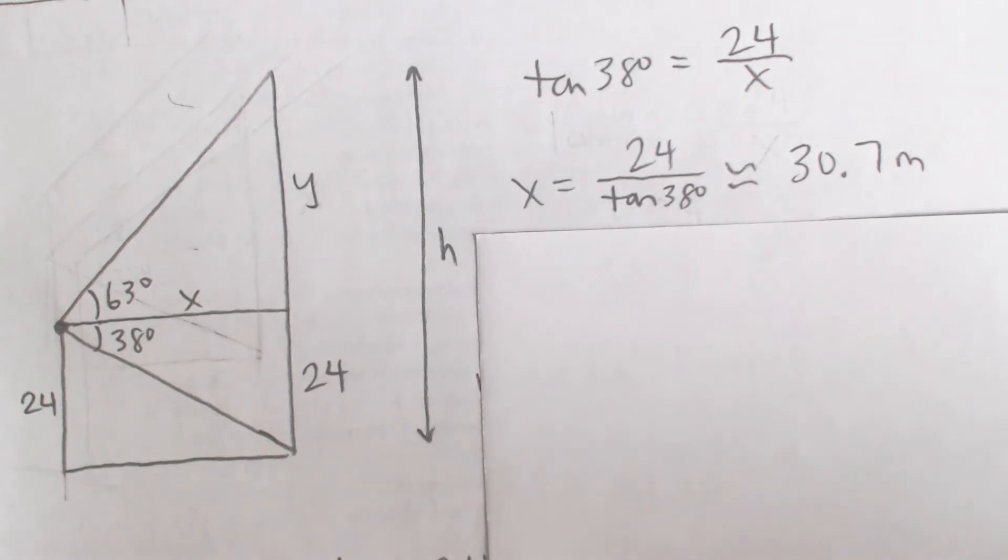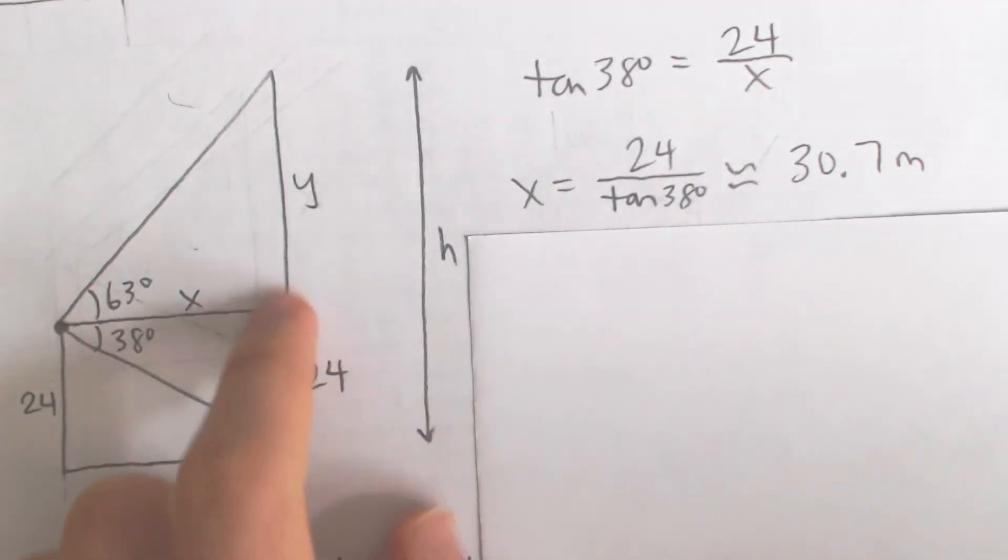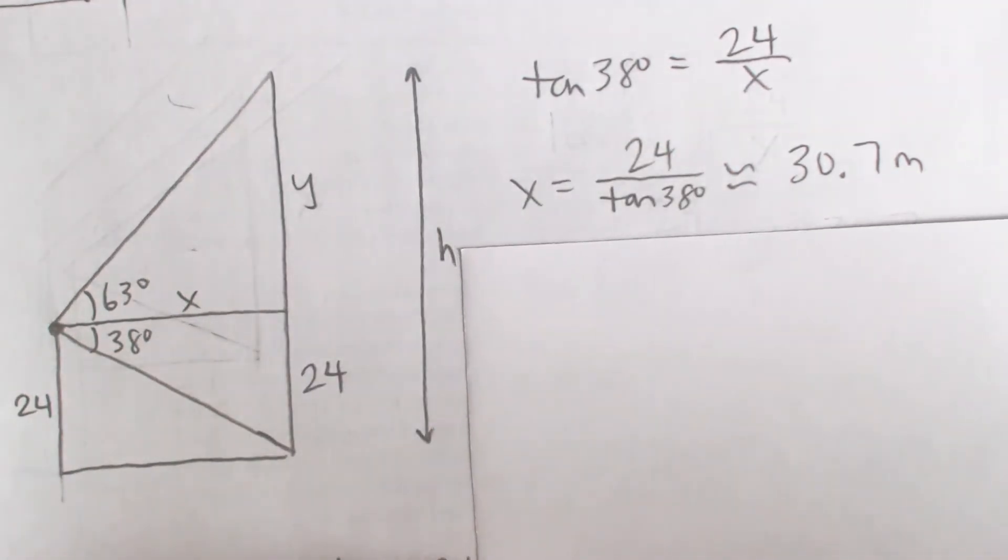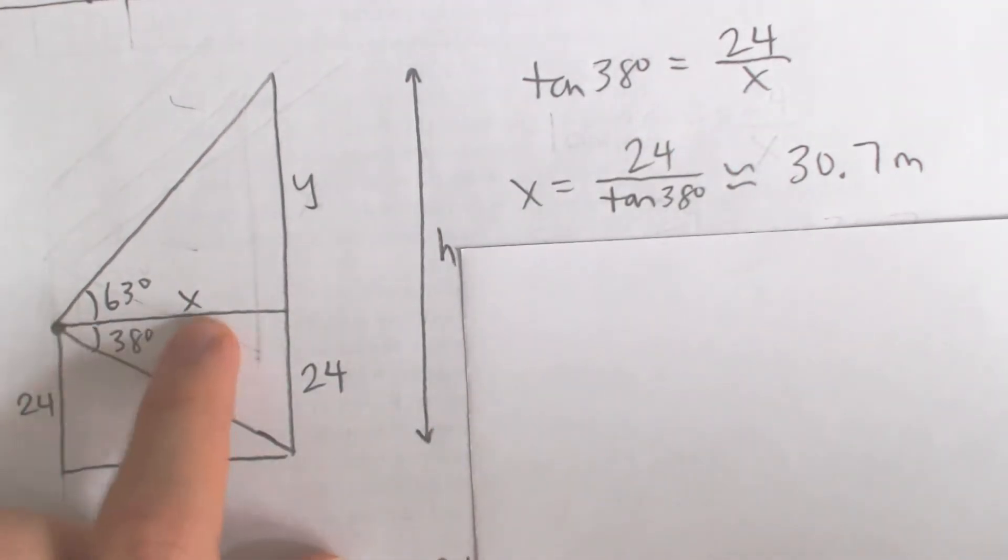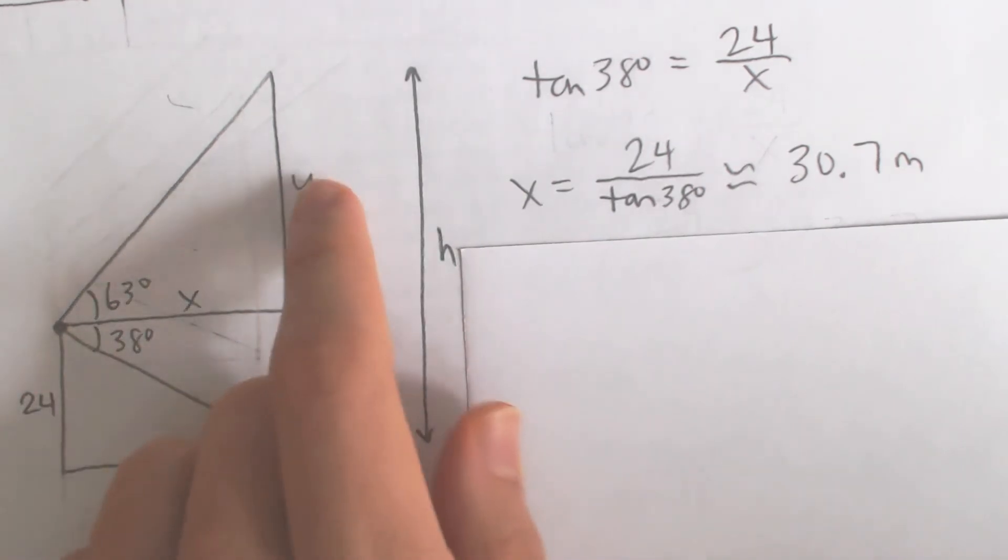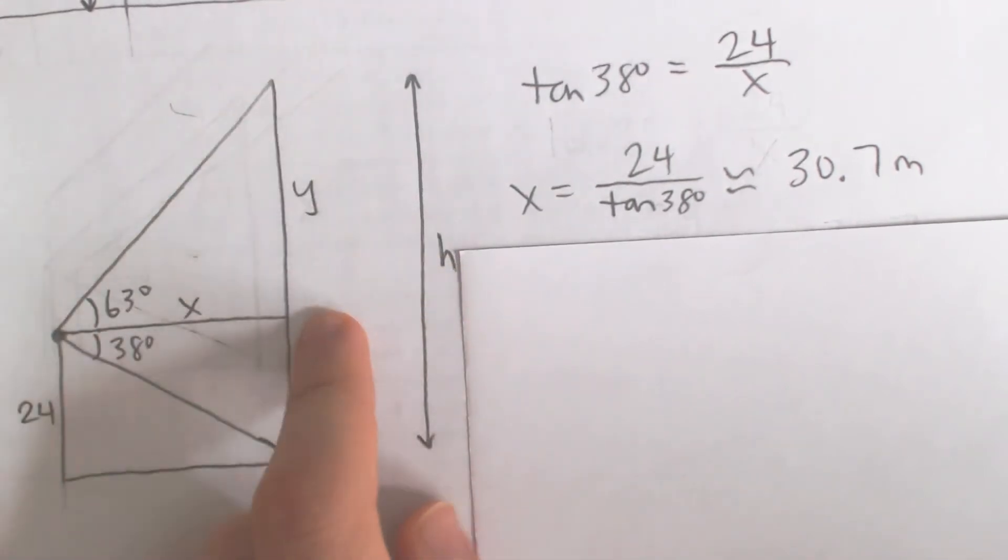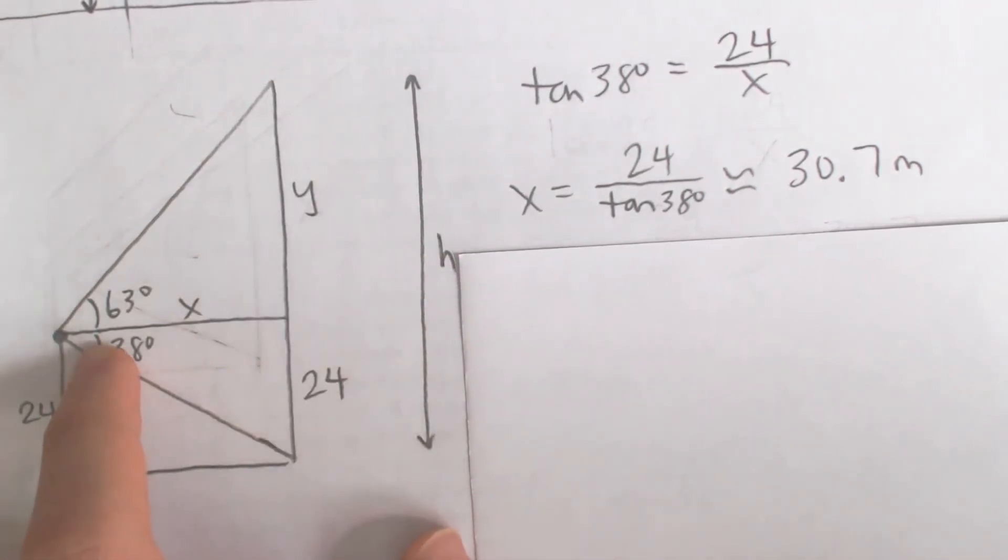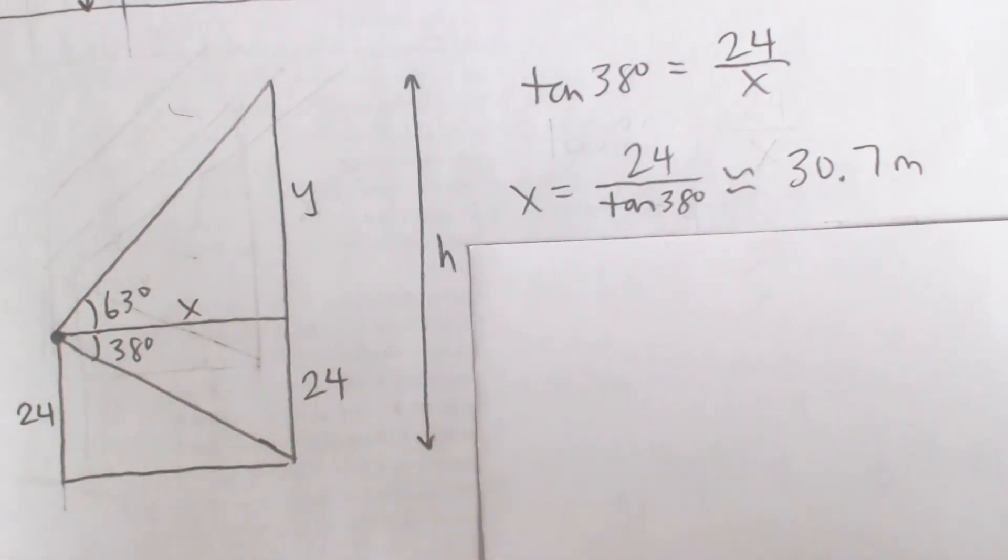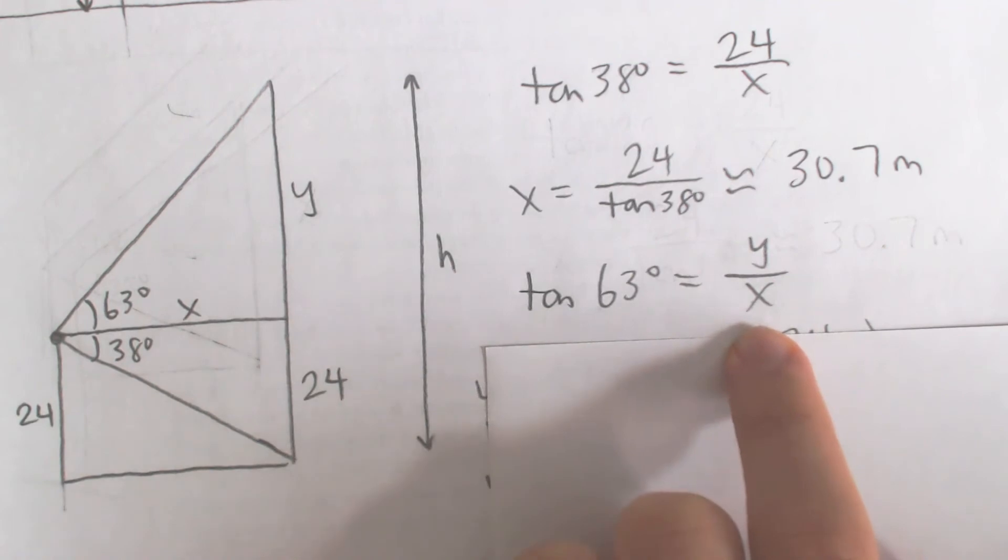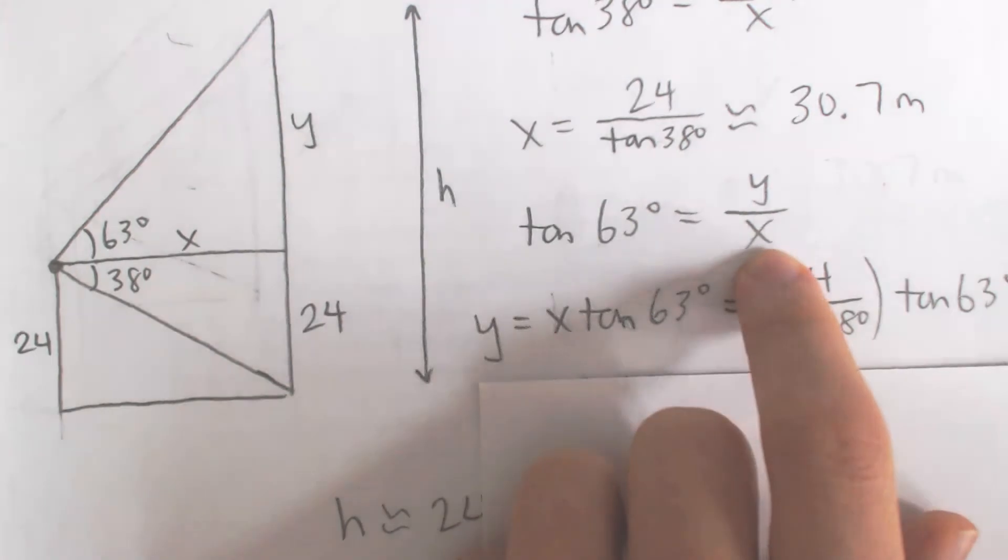We don't actually have to calculate this because we're just trying to find the height of the building, but I'm going to use this exact value later on. Now we know this side x, and we want to find this side y. We have a 63 degree angle—this y side is opposite to 63, and adjacent to 63 is the x side. So we can write tangent 63 equals y divided by x. If we want to solve for y, just multiply both sides by x.